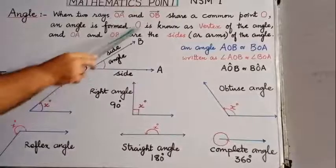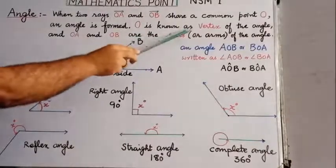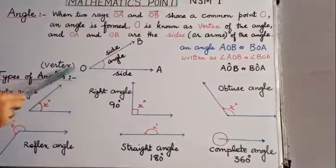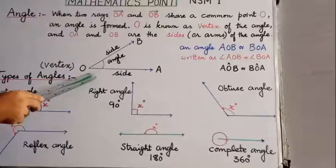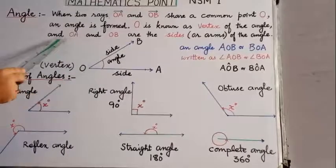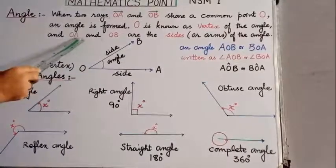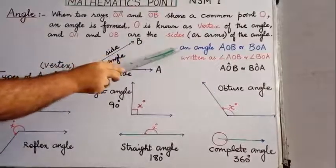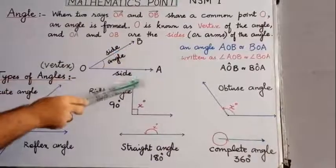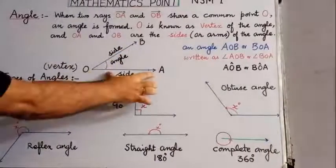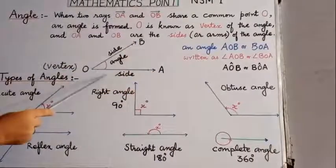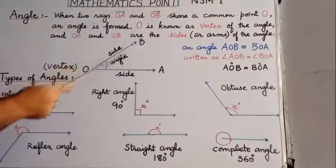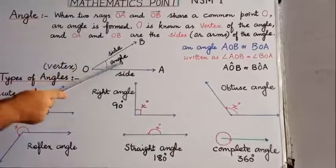Look at this figure. Point O is known as the vertex of the angle. Ray OA and ray OB are the sides or arms of the angle. So OA and OB are the sides — side OA and side OB — these are the sides of an angle.